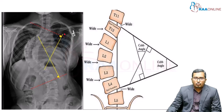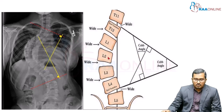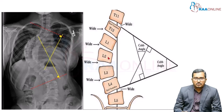We are going to draw two perpendicular lines to each of the end-plate lines. This is the perpendicular line for the uppermost vertebra, and this is the perpendicular line for the lowermost vertebra. The intersection of these lines makes an angle — this is the Cobb's angle. As the Cobb's angle increases, the complications due to scoliosis are going to increase.